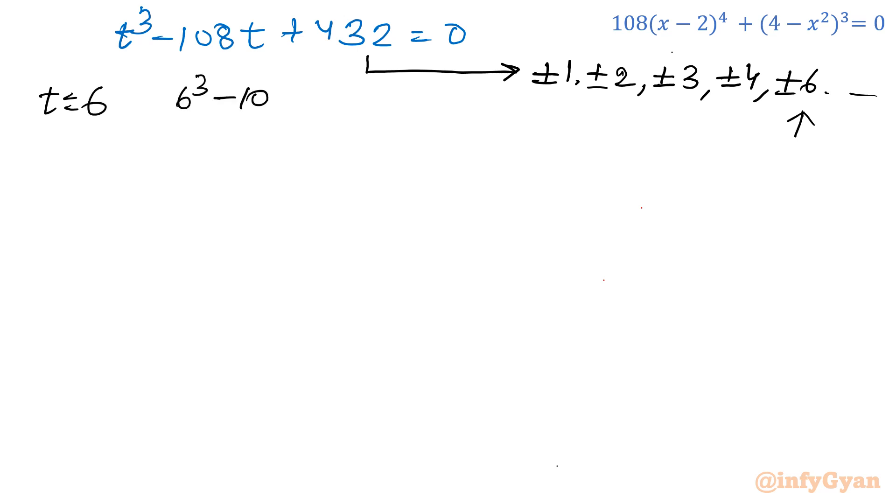See how it is. t equals 6. Then I will write 6³ minus 108 times 6 plus 432. Let us find out this value: this is 216, minus 648, plus 432. Out of these eligible factors, we can test our solution. t equals 6 is giving us 0. That means it is true. Once we know the base root or base solution t equals 6, I am going to use favorite synthetic division.